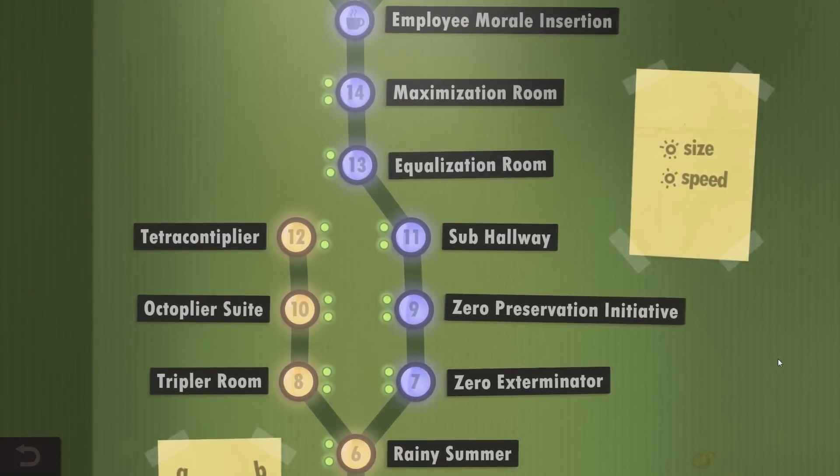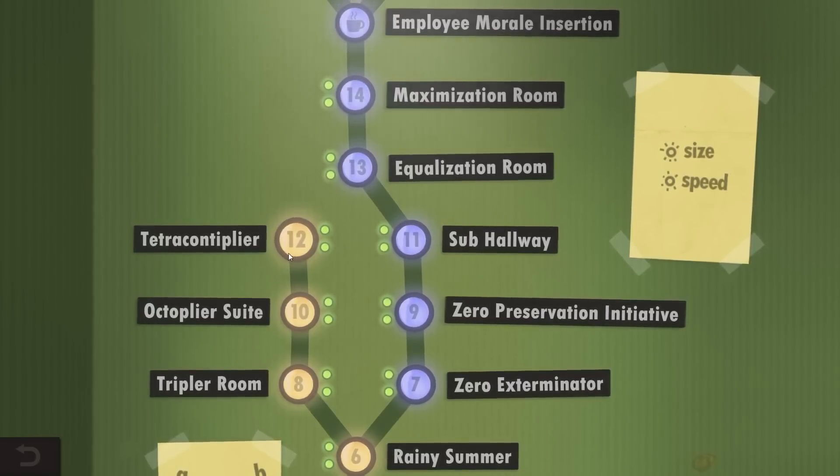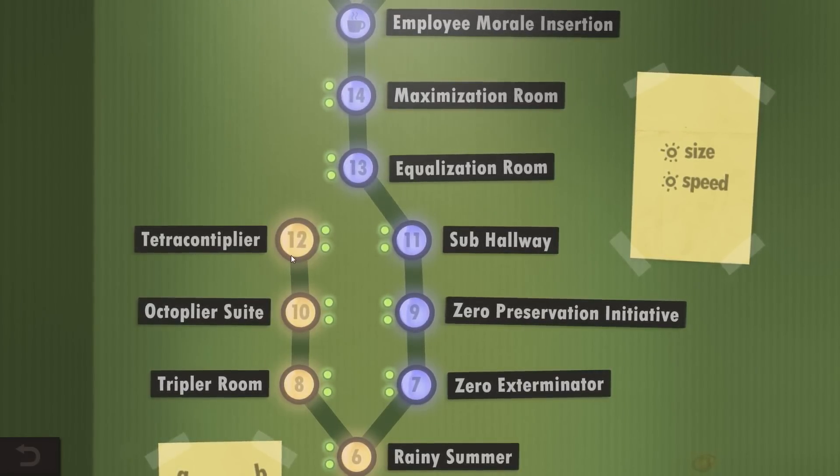Hello and welcome back everyone to Human Resource Machine. This time we are going to take a look at Year 12, the Tetra Contemplier.